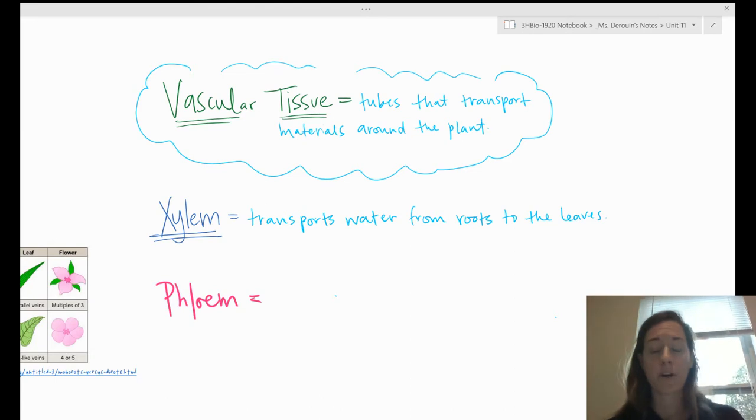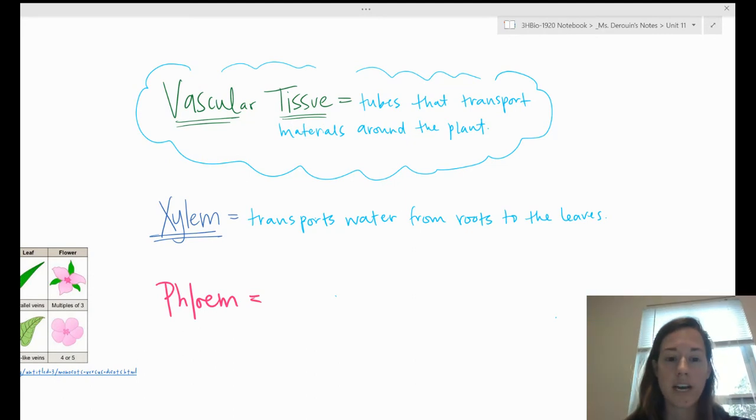One other thing, like going way back to the beginning of the year that's important for this, is we talked about how water has these special properties: hydrogen bonding, cohesion, all that sort of stuff. Xylem usually, I'll say almost always, has to move against gravity because it's going from roots to the top of the plant. The properties of water like cohesion and adhesion, capillary action where it's sucking upwards like a straw, is really important and really allows this transport to occur. Without it, plants wouldn't be able to do photosynthesis and survive.